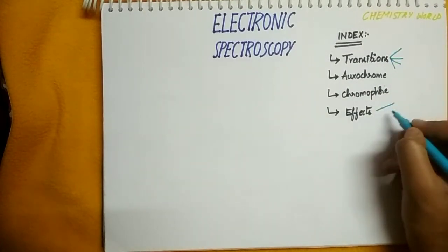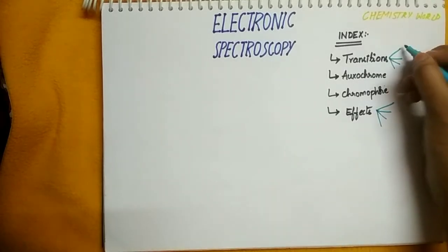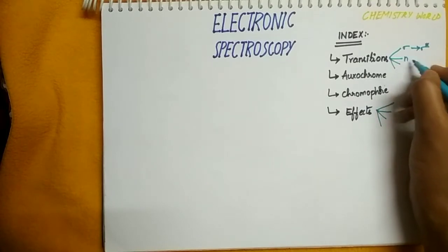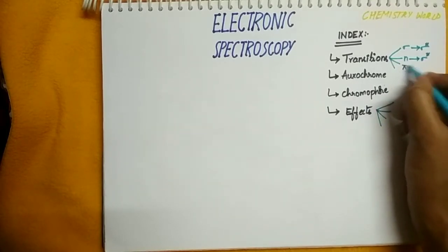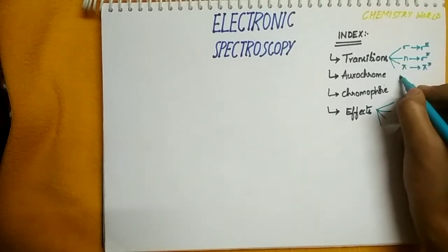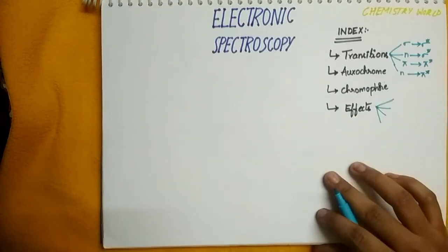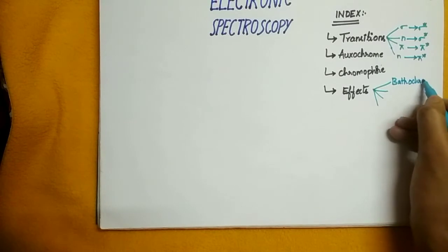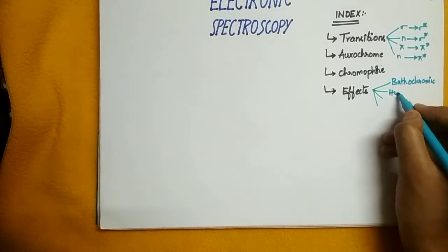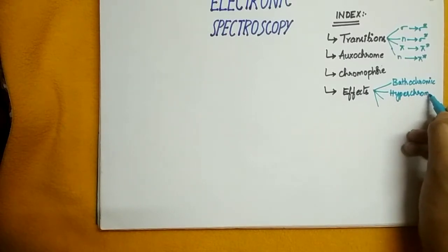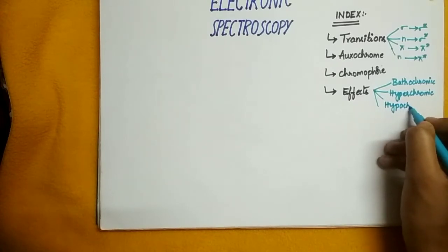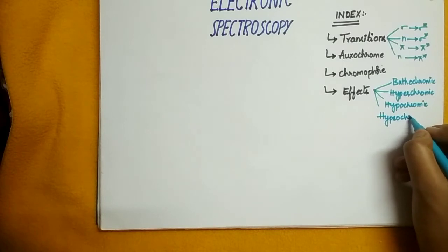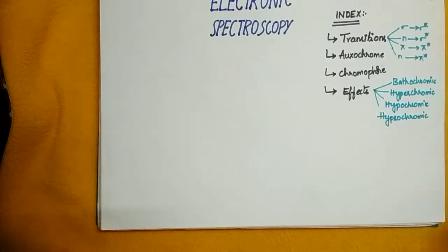We have four types of transitions and four types of effects. The four transitions are: sigma to sigma star, n to sigma star, pi to pi star, and n to pi star. The four effects are: bathochromic shift, hyperchromic shift, hypochromic shift, and hypsochromic shift. These are the four effects in UV spectroscopy.